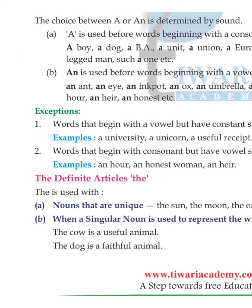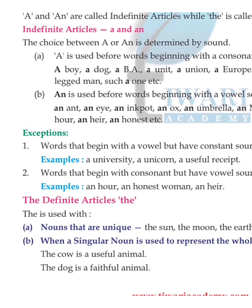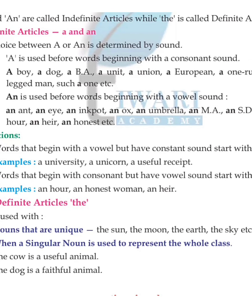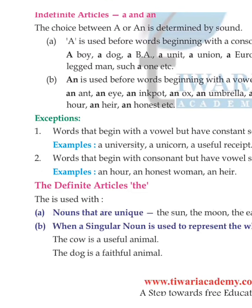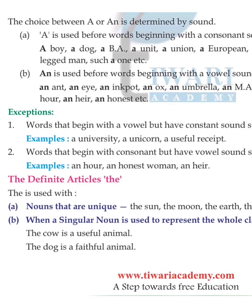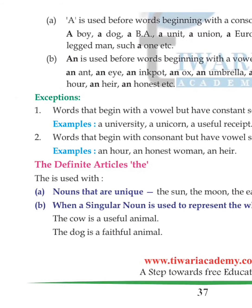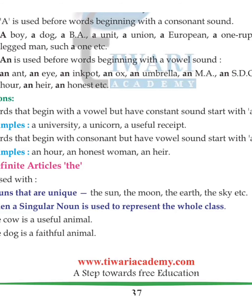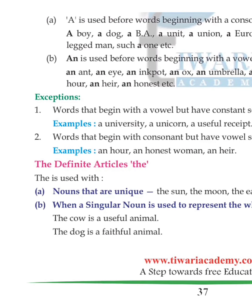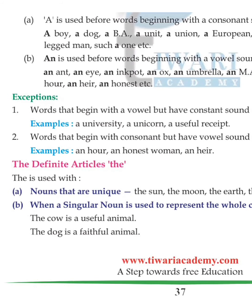Now let's see exceptions. Words that begin with a vowel letter but have a consonant sound use 'a', like: a university, a unicorn, a useful receipt. Words that begin with a consonant letter but have a vowel sound use 'an', like: an heir, an honest woman, an hour.